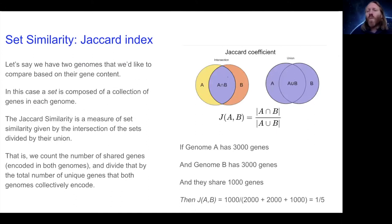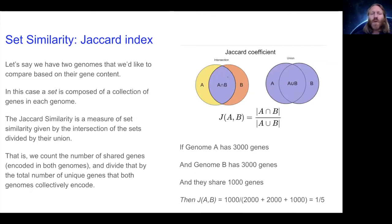One task we often like to do in genomics and metagenomics is compare two sets of DNA sequences for a variety of reasons. For this example, let's assume we have two genomes and we'd like to compare their gene content. A set is composed of a collection of genes in each genome. The Jaccard similarity is a measure of set similarity, given by the intersection of the sets divided by their union. We would count up the number of shared genes encoded by both genomes and divide that by the total number of unique genes that both genomes collectively encode.